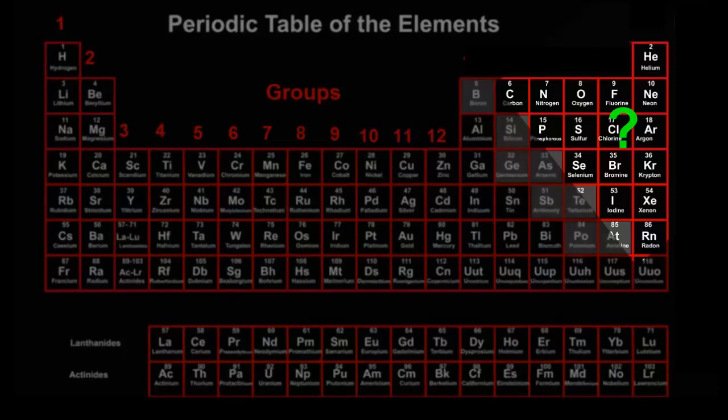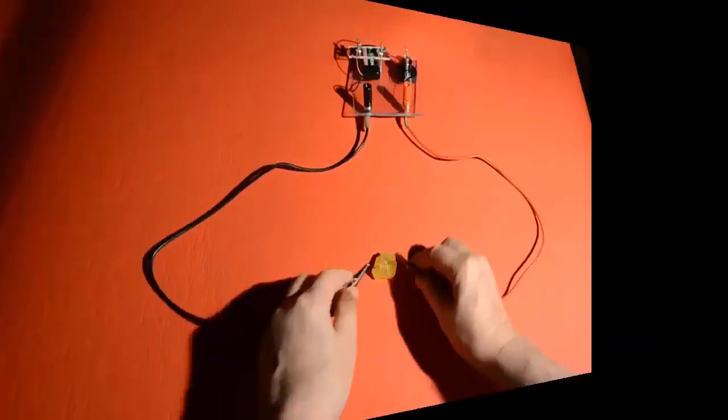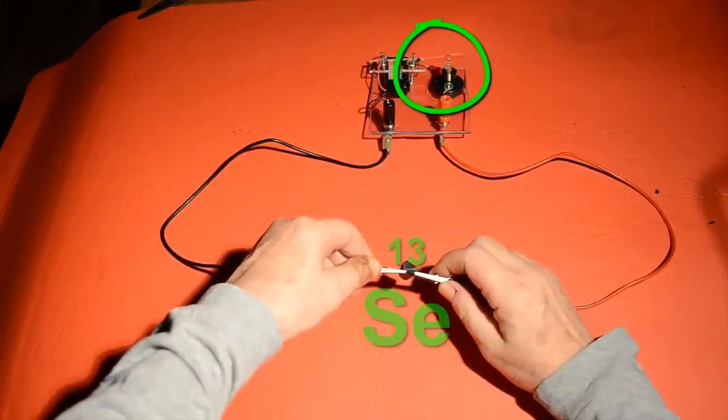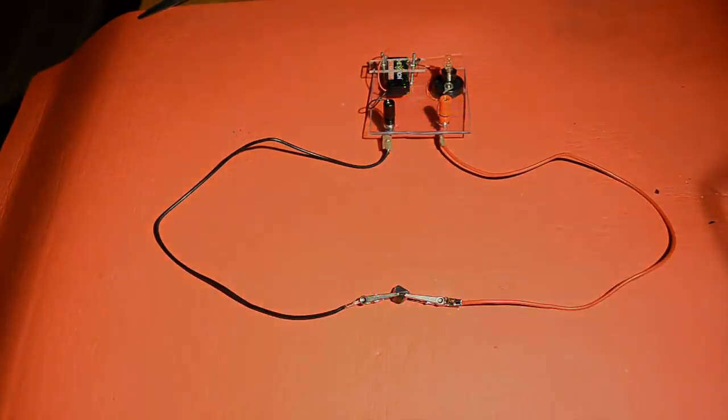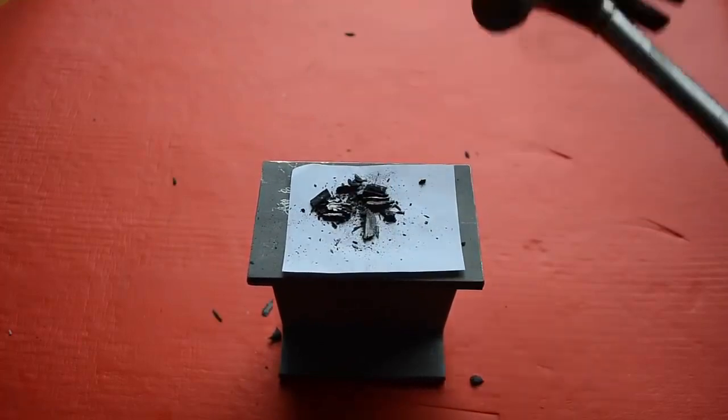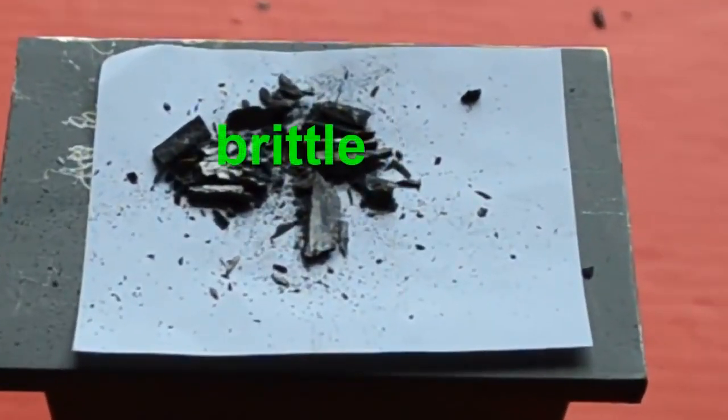They're the opposite. Most non-metal elements are liquids or gases, but there are a few solids, and these can be more easily tested. Here, sulphur and selenium are showing that they don't conduct electricity. Can you see that the bulb doesn't light up? And if you hit this carbon with a hammer, it smashes into bits. This is called being brittle. It's the opposite of being malleable.